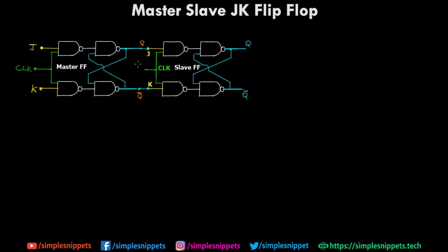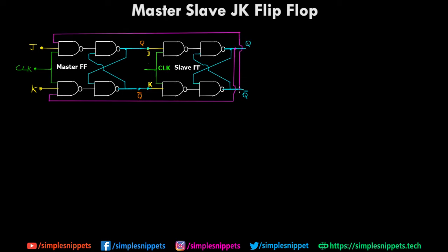Step number two is to add the feedback again. We removed the feedback of the first master flip-flop, so it has to have some feedback — that feedback is going to come from the slave flip-flop. So let's add those pink lines again. Q is going to be connected to K of the master flip-flop, and Q bar is going to be connected to J of the master flip-flop. Now the feedback loop is connected.